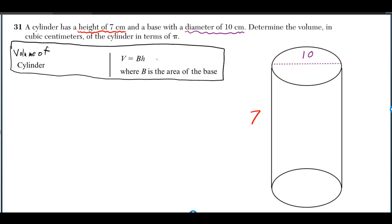Alright, so I copied this formula from the reference sheet. The volume of a cylinder is equal to the area of the base times the height. Either circle can be called the base of the cylinder, and we've got to find the area of this base.